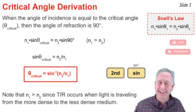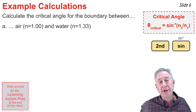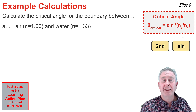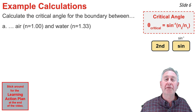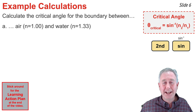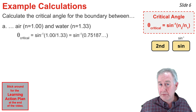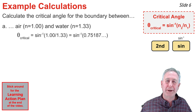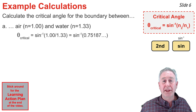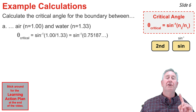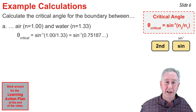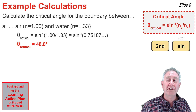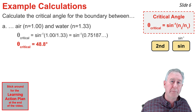Now let's try three example calculations using our critical angle formula. First, finding the critical angle for the water-to-air boundary: take the index of refraction for air, put it on top, and divide by 1.33 for water. Find that ratio, then take the inverse sine using the calculator's second-sine function, and you get 48.8 degrees for the critical angle of the water-to-air boundary.